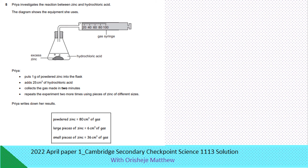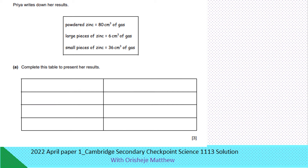Question 5: Priya investigates the reaction between zinc and hydrochloric acid. The diagram shows the equipment she uses — a syringe, excess zinc, and hydrochloric acid. She puts one gram of powdered zinc into the flask, adds 250 cm³ of hydrochloric acid, and collects the gas made in two minutes. She repeats the experiment two more times using pieces of zinc of different sizes. Priya writes down her results — complete the table to present her results.